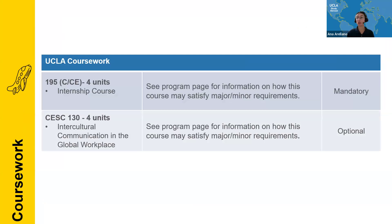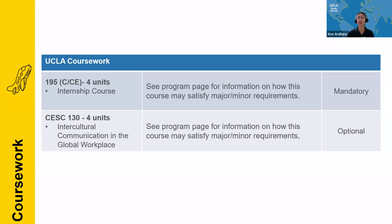We offer two courses on the program. All students will enroll in the 185 internship course — we encourage you to view each program page to see what major or minor requirements it may satisfy. We also offer the optional CSD 130 course for an additional four units, which is a reflection course on your communication skills and how they relate to norms in your internship site. If you intend to use financial aid to help cover the cost of this program, you must take both courses and enroll in the eight-unit program.